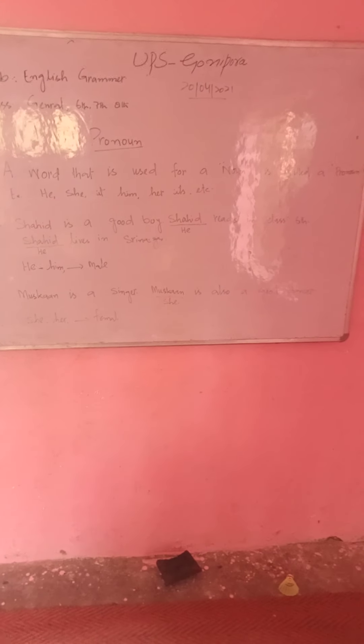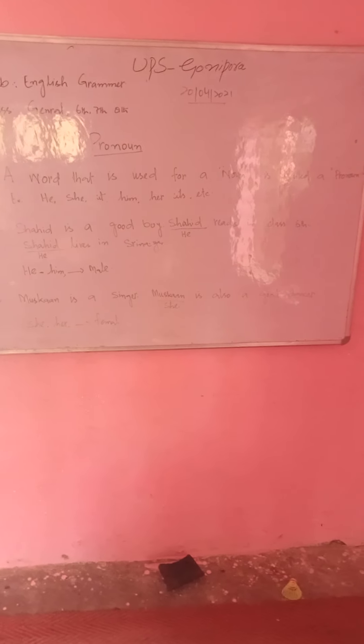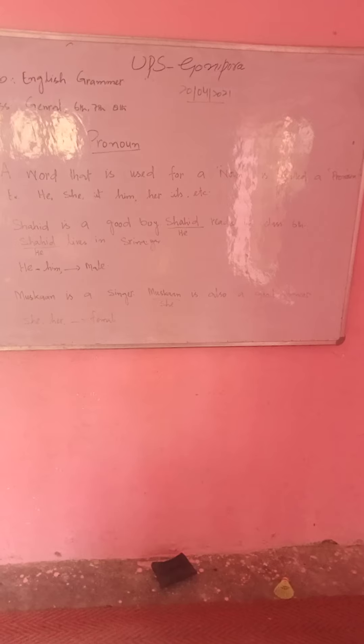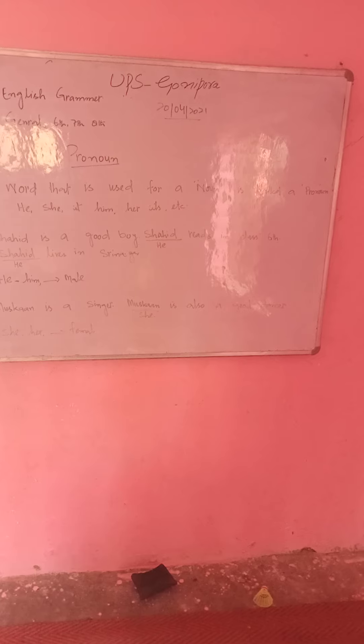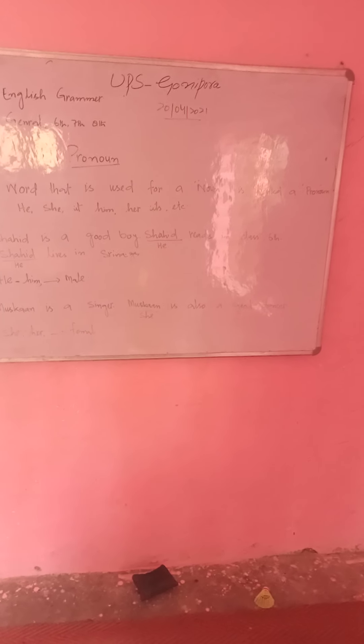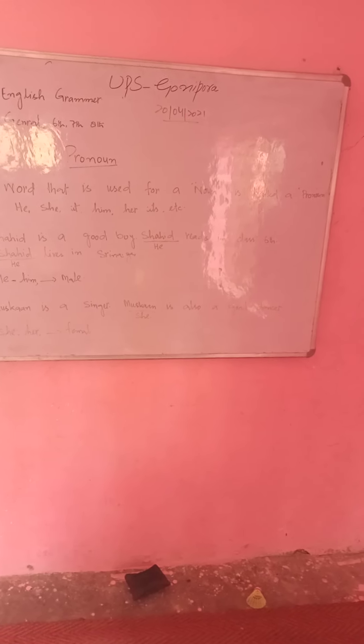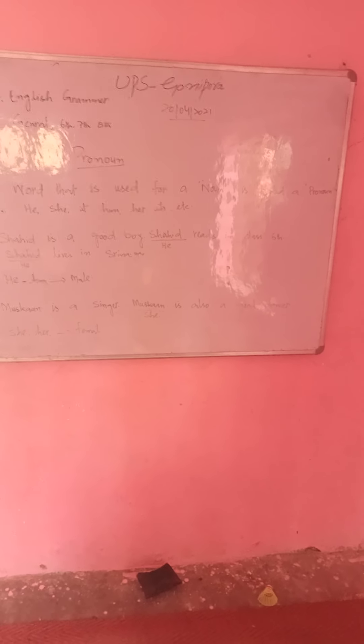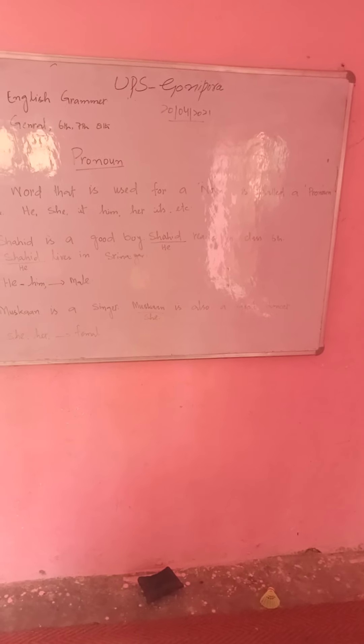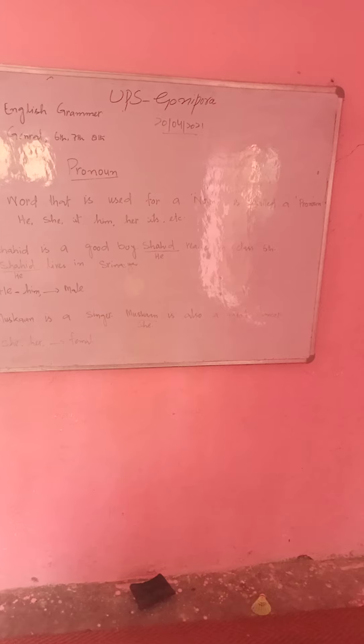Another example: Muskan is a singer. Muskan is also a good dancer. Since we keep repeating the noun 'Muskan,' we can replace it with the word 'she.' Because Muskan is a female, the pronoun used is 'she.' So Muskan is the noun, and 'she' is the pronoun used in its place.